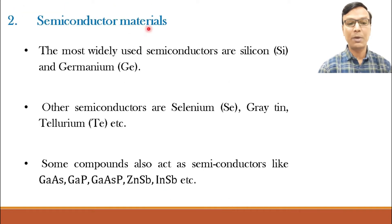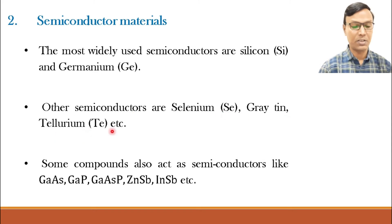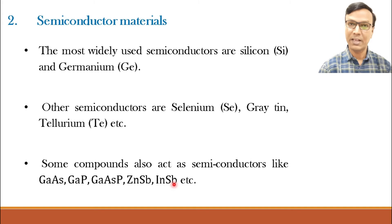Let us see different semiconductor materials. The most widely used semiconductor materials are silicon and germanium. Other semiconductor materials which are used are selenium, tellurium, etc. Also, some compounds act as semiconductors, such as gallium arsenide, gallium phosphide, gallium arsenide phosphide, zinc antimonide, indium antimonide, etc.